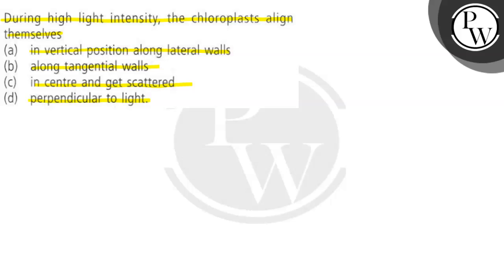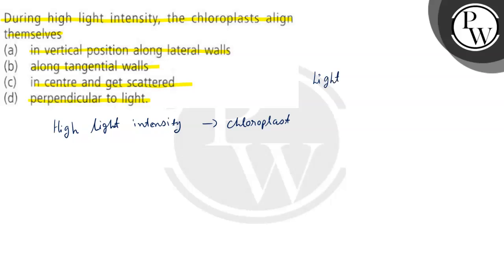The question is asking that if there is high light intensity, and light is falling on the chloroplast, then how will the chloroplasts align? So light is directly proportional to the rate of photosynthesis — the more the light, the more the rate of photosynthesis will be.